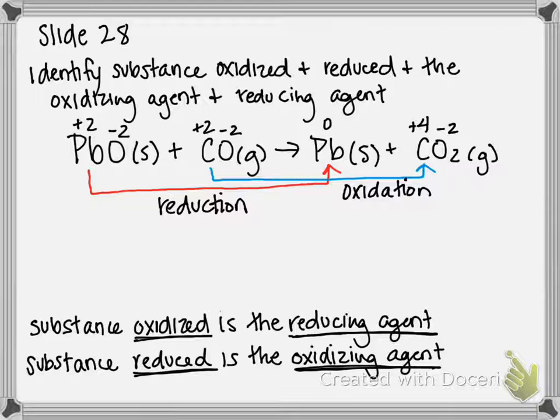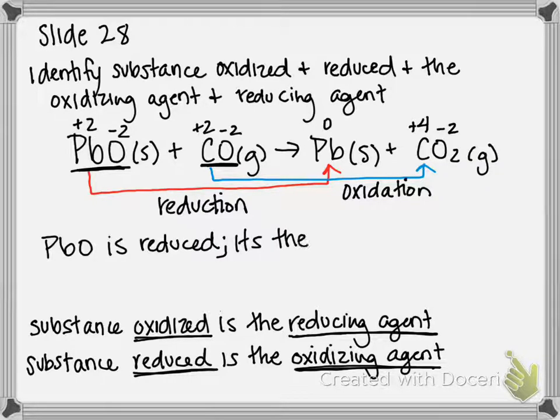Now we can figure out what the reducing agent is and what the oxidizing agent is. So this is the compound undergoing reduction, and this is the compound undergoing oxidation. So since PbO, or lead oxide, is reduced, that means it's the oxidizing agent. Remember the thing that itself is reduced is the oxidizing agent.